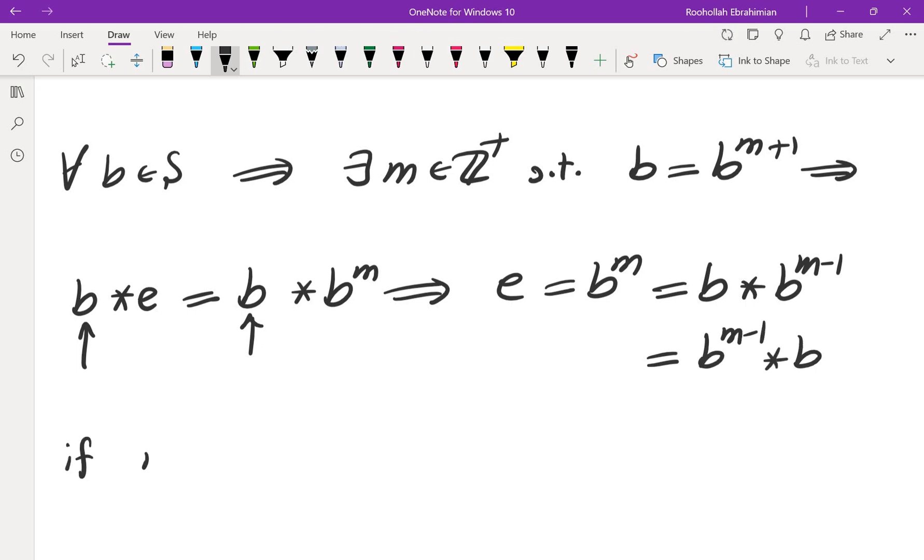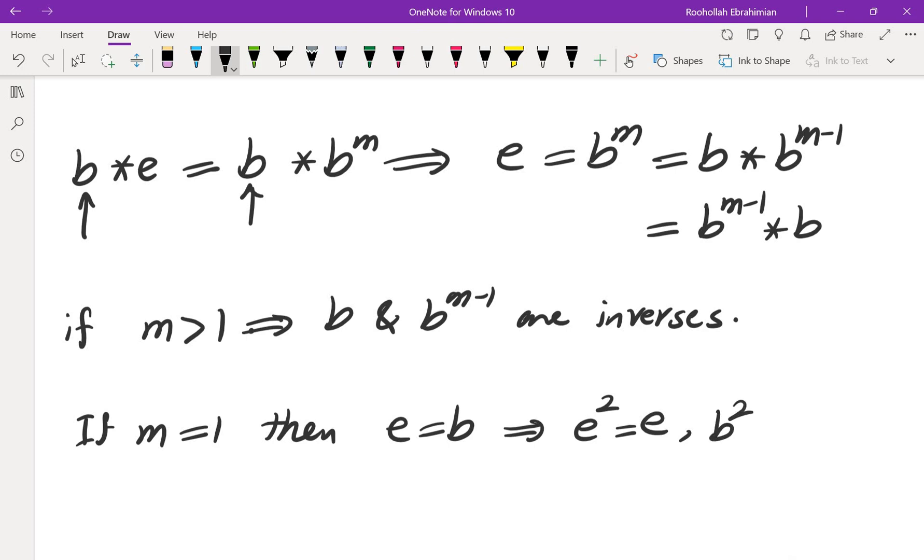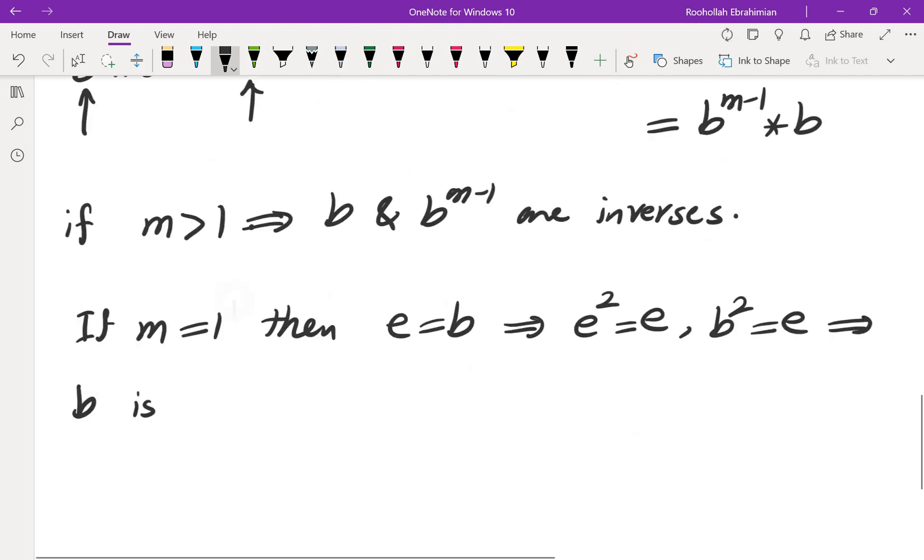This is only if m is more than 1. So what does that mean? It means b and b to the m minus 1 are inverses. If m is equal to 1, then e is equal to b. And we know that e squared is e. So that means b squared is also e, which means b is the inverse of itself.